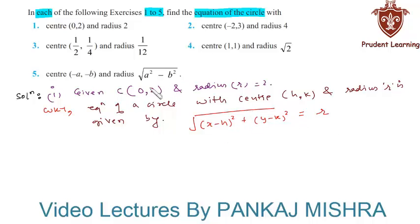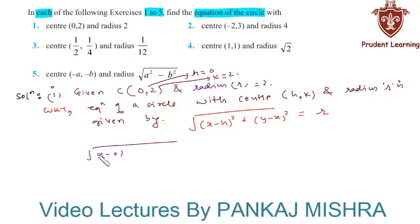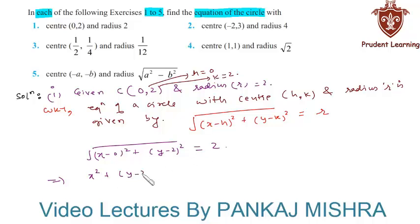Since we are given that coordinates of center are 0 comma 2, here we have h equal to 0 and k equal to 2. Substituting the values of h, k, and r in this formula, we have the square root of (x minus 0) whole square plus (y minus 2) whole square is equal to 2. On squaring this equation on both sides, this gives us x square plus (y minus 2) whole square is equal to 4.